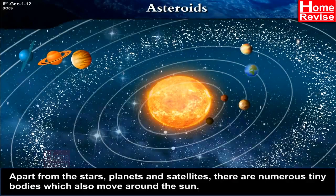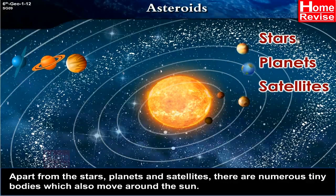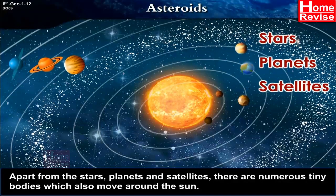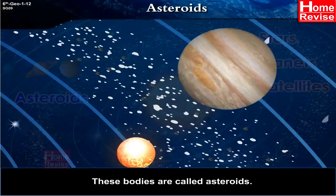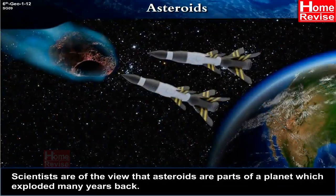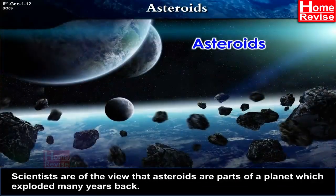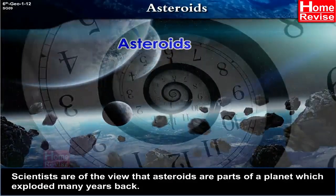Apart from the stars, planets and satellites, there are numerous tiny bodies which also move around the Sun. These bodies are called asteroids. They are found between the orbits of Mars and Jupiter. Scientists are of the view that asteroids are parts of a planet which exploded many years back.